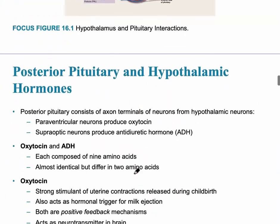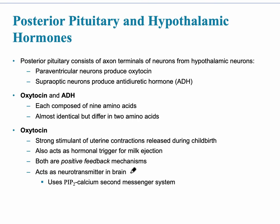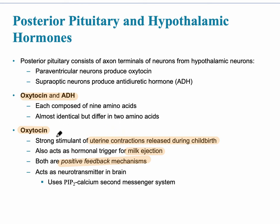The next slide summarizes the posterior pituitary gland, which stores two hormones: oxytocin and ADH, released based on need. Oxytocin is released during uterine contractions in childbirth and acts as a hormonal trigger for milk ejection. This is a positive feedback mechanism — one of the exceptions in the body — where uterine contractions stimulate oxytocin release, which in turn causes more uterine contractions.